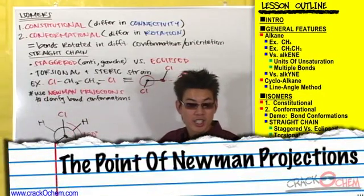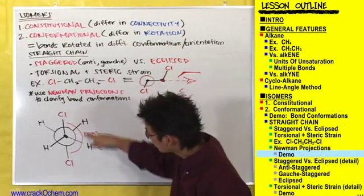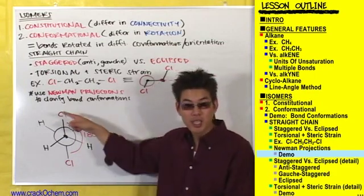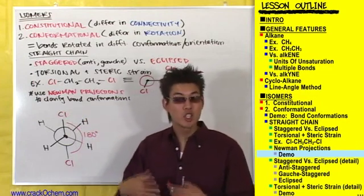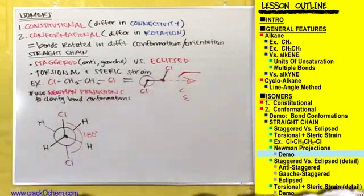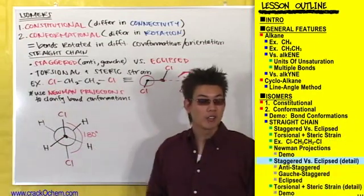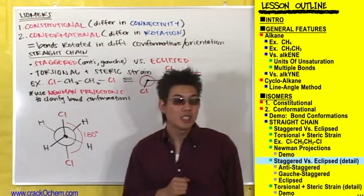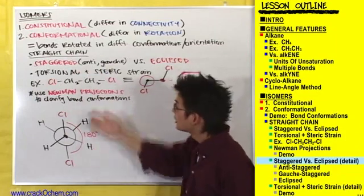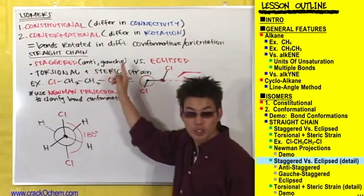The whole point of these Newman projections is just to be able to see how bonds are oriented with one another — like how we saw that these two chlorines' bonds are 180 degrees apart. And determining the number of degrees separating these bonds is important to determine which conformational isomer is the most stable. We're going to see how this works in just a second. So far we've only drawn one Newman projection to represent one conformational isomer of this compound. There are two main types of conformations that a straight chain compound can be in: it can either be staggered or it can be eclipsed.